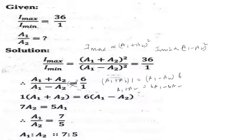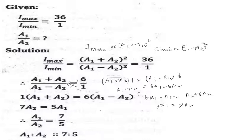Rearranging: 6a1 minus a1 equals a2 plus 6a2, which gives 5a1 equals 7a2. Therefore the ratio a1 to a2 is 7 to 5.